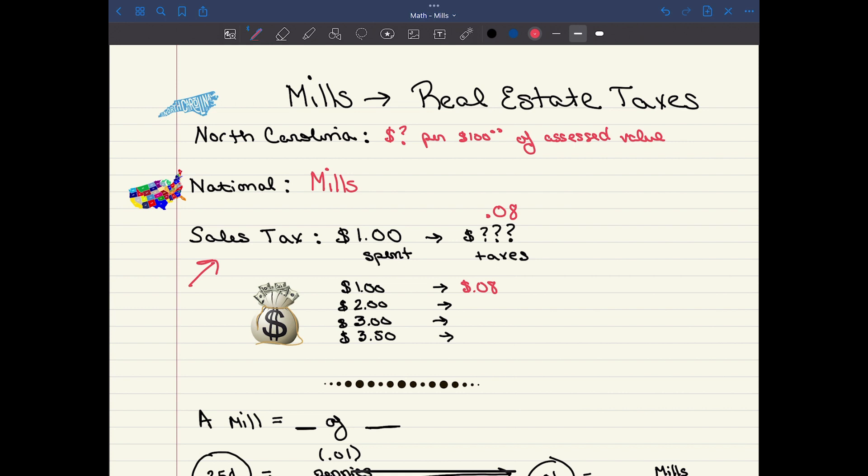If you buy something for $2, you would owe $0.16 in taxes. If you buy something for $3, you would owe $0.24 in taxes.